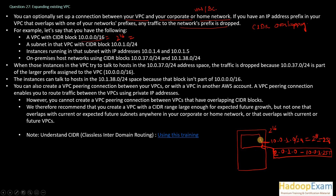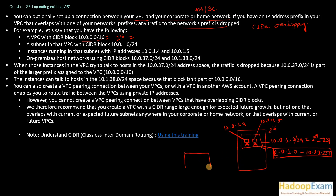Now, instances running in this subnet have IP addresses 10.0.1.4 and 10.0.1.5. Those are the two instances running in this subnet. The on-premises host network uses a CIDR block of 10.0.37.0/24 — that is your corporate data center.